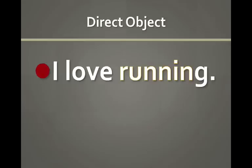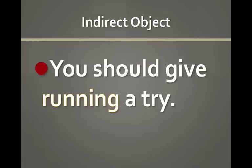The direct object — what is loved? Running. For the indirect object: 'you' is the subject, 'give' is the verb, 'try' is the direct object — that is what is being given. We're giving a try, and it's being given to running. We remember here too that the indirect object always comes before the direct object.